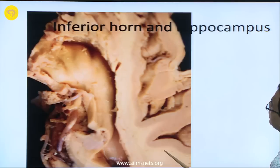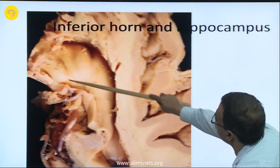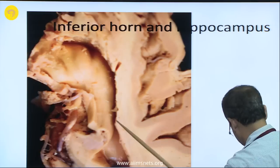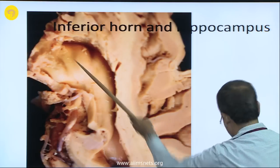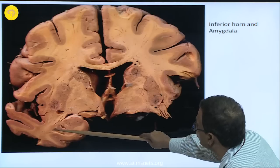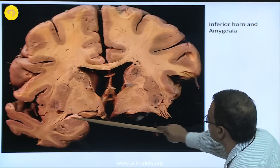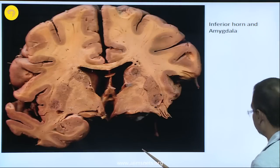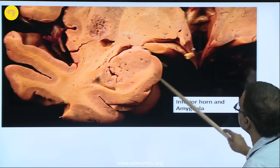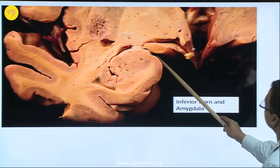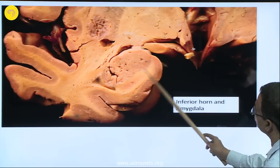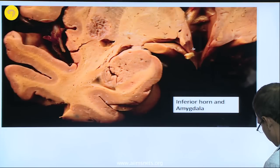In the next slide I will show a bigger picture of the inferior horn. At the tip of the inferior horn lies the amygdala — this is the inferior horn and here lies the amygdala; on the other side amygdala is not seen. This is the tip of the inferior horn and this is the almond-shaped nucleus, the amygdala; on the medial side of the temporal lobe, if you go from the medial side, you can reach the amygdala.